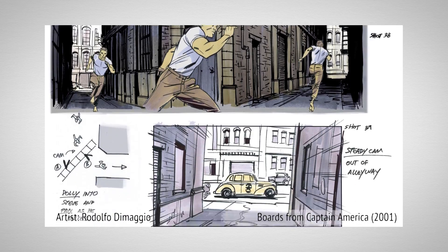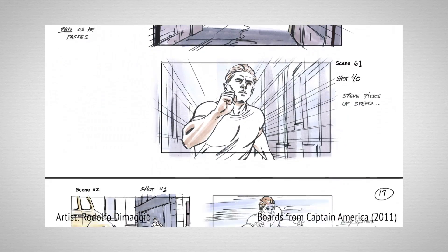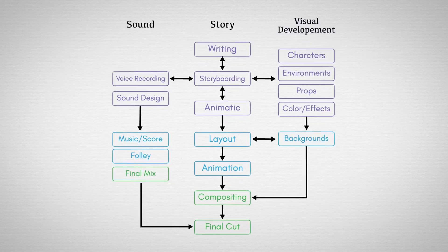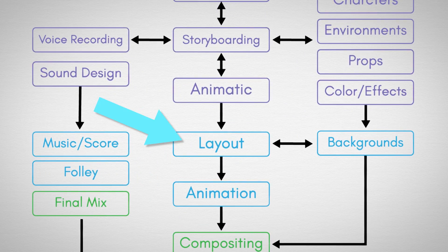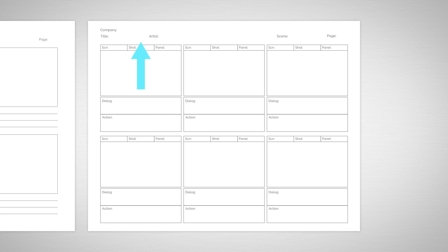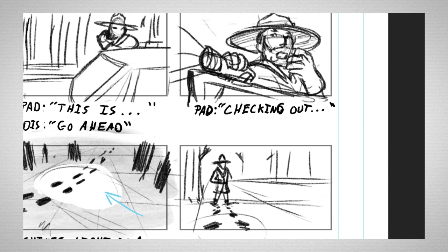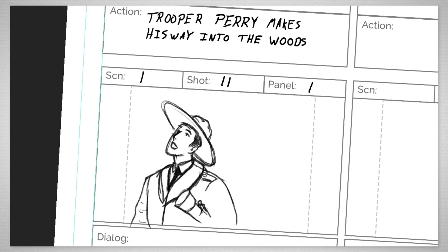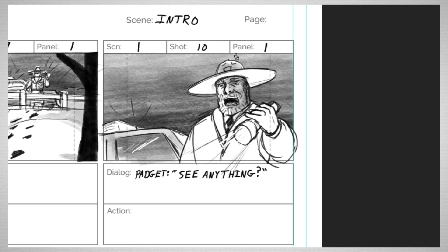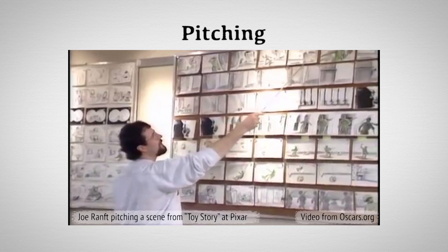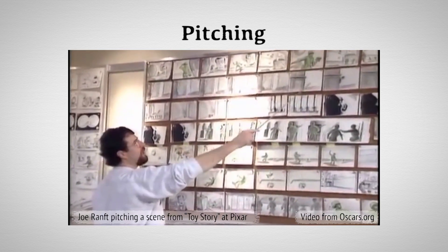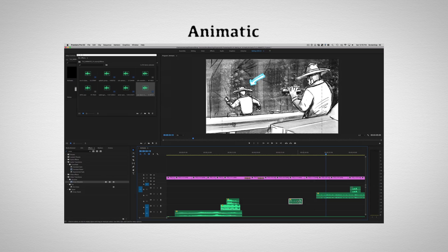Then it's time to jump right into the action. We'll go over the storyboard pipelines and structure, and start making one ourselves. We'll see how to turn a script into thumbnails, into rough boards, into clean boards, and even how to pitch your storyboard and create an animatic.